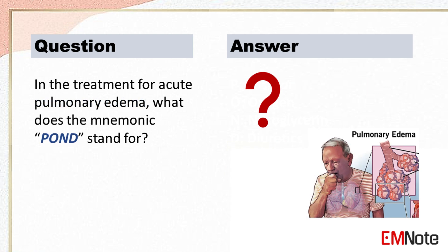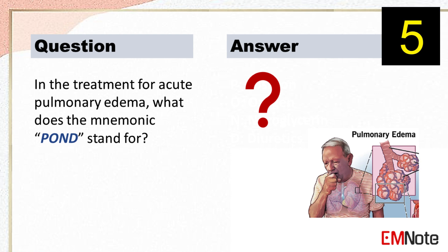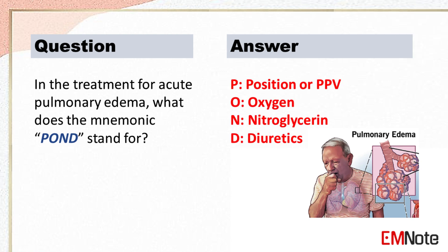In the treatment for acute pulmonary edema, what does the mnemonic POND stand for? The mnemonic POND stands for: P — Position or positive pressure ventilation; O — Oxygen; N — Nitroglycerin; D — Diuretics.